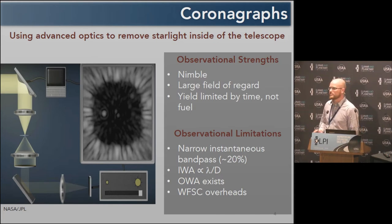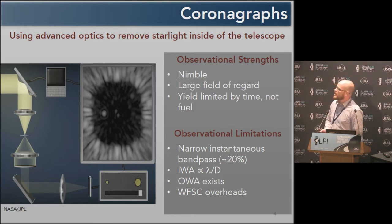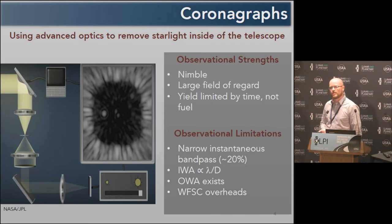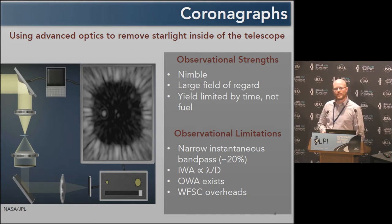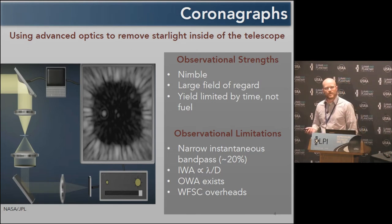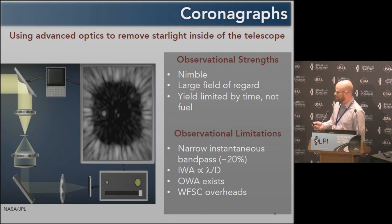Observational limitations of coronagraphs are that the bandpass is relatively narrow, on the order of about 20%. The inner working angle also grows with wavelength, so if you see a planet at half a micron, that does not necessarily mean you will get to see it at one micron.